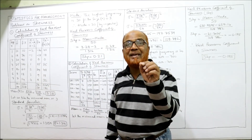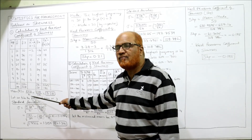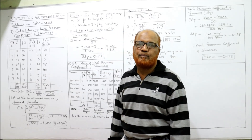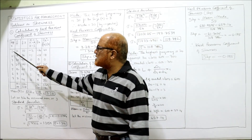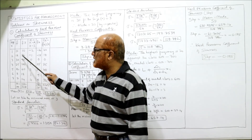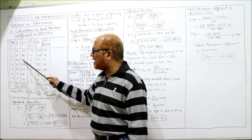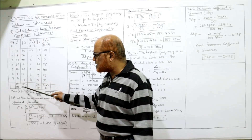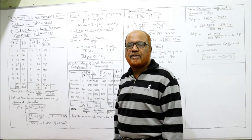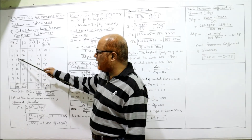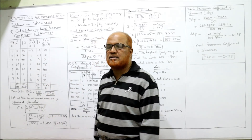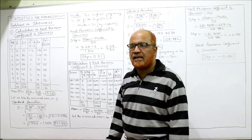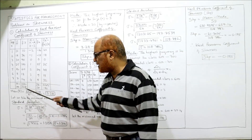First, we multiply f × x to get fx, because the formula for mean is Σfx / n. So: 1×10=10, 2×18=16, 3×30=90, 4×25=100, and so on. The total of fx is 328, and n (total frequency) is 100. Therefore, mean = Σfx / n = 328 / 100 = 3.28.